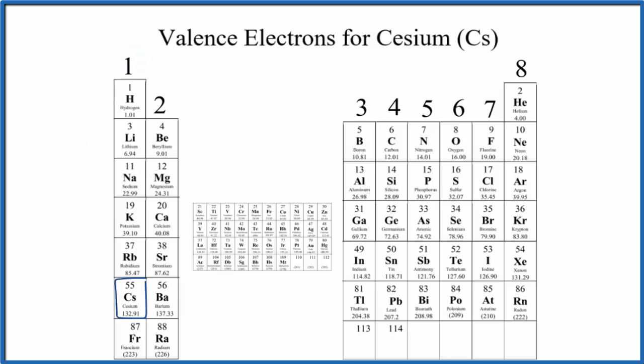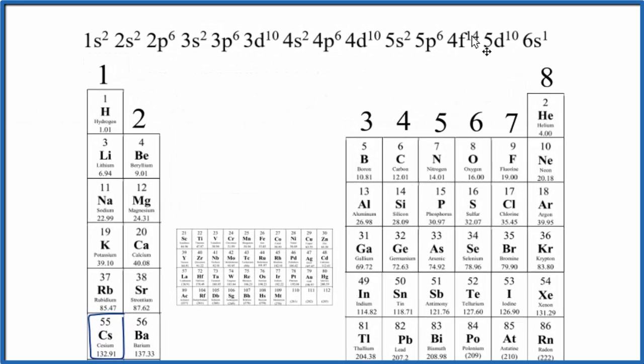We could also look at the electron configuration for cesium to find out the number of valence electrons. So the electron configuration is a bit long since we're down here with atomic number 55, but we want to look at the highest energy level, and that is this 6s1. So since it ends in 6s1, it has one valence electron, just like we found looking at the periodic table.